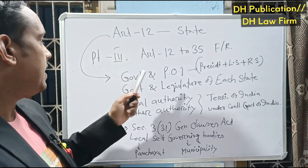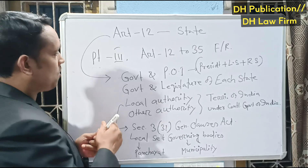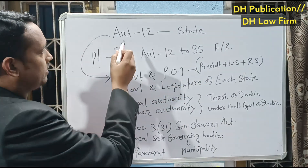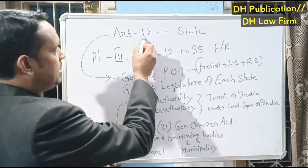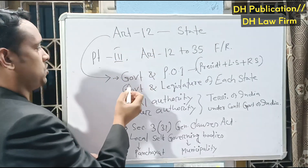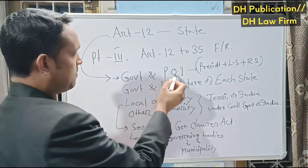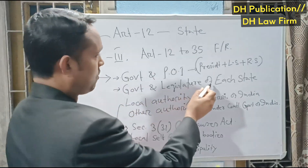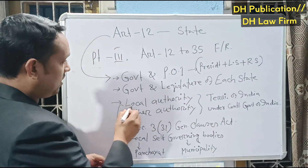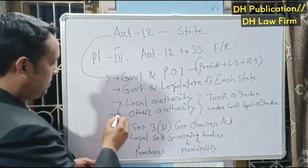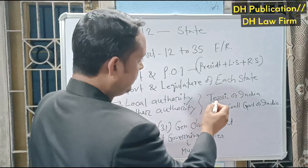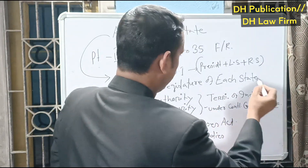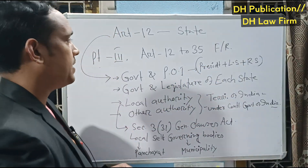Article 12 defines the term 'state' to include: first, the government and parliament of India; second, the government and legislature of each state; third, local authorities; and fourth, other authorities within the territory of India or under the control of the government of India. These four components form the definition of 'state' under Article 12.